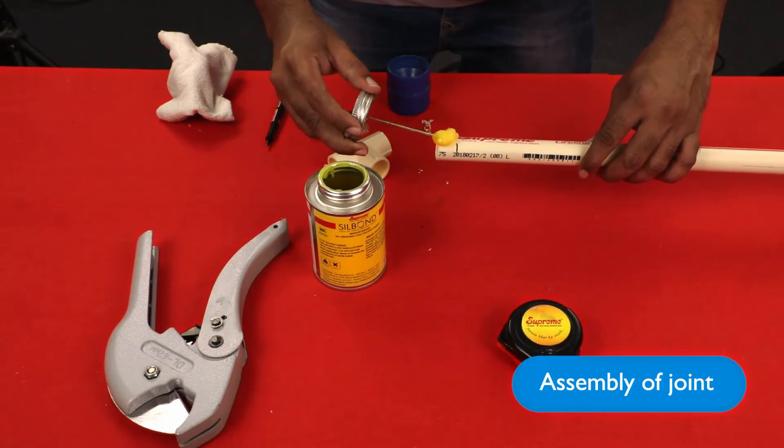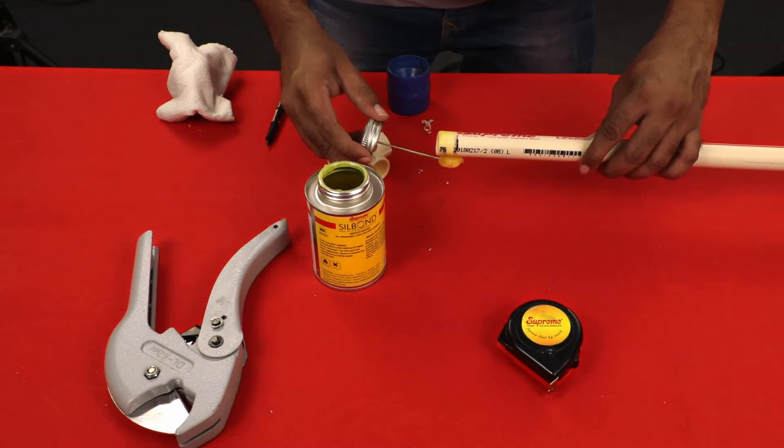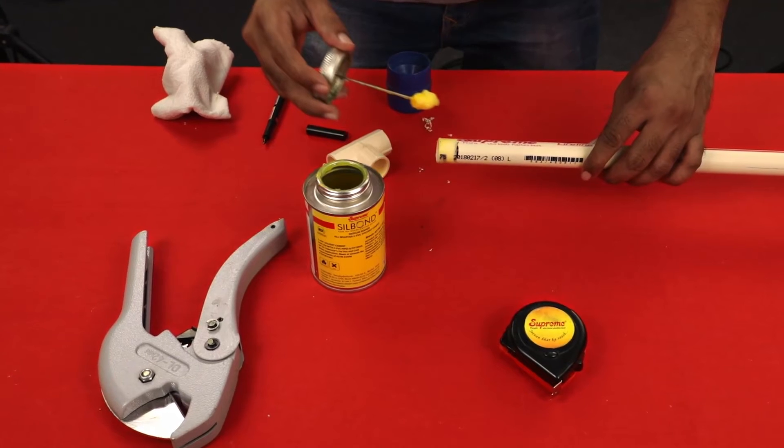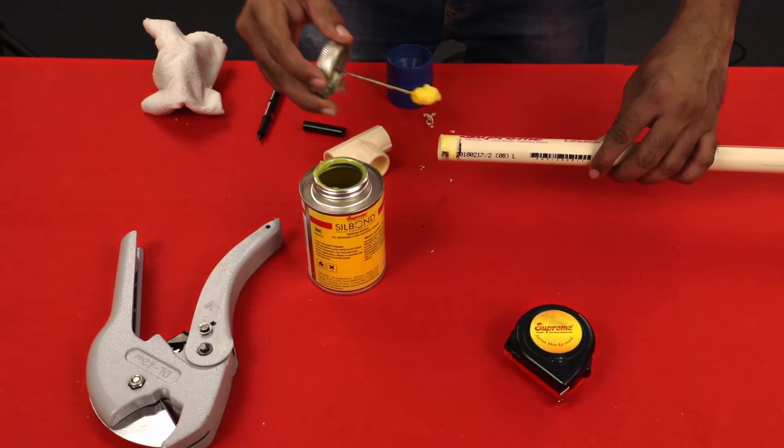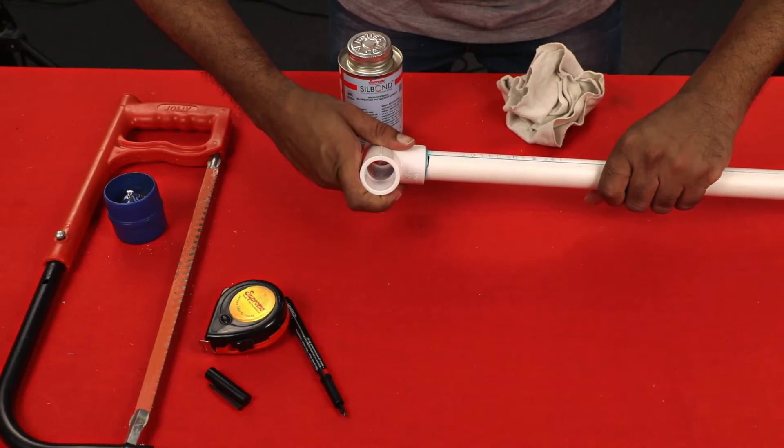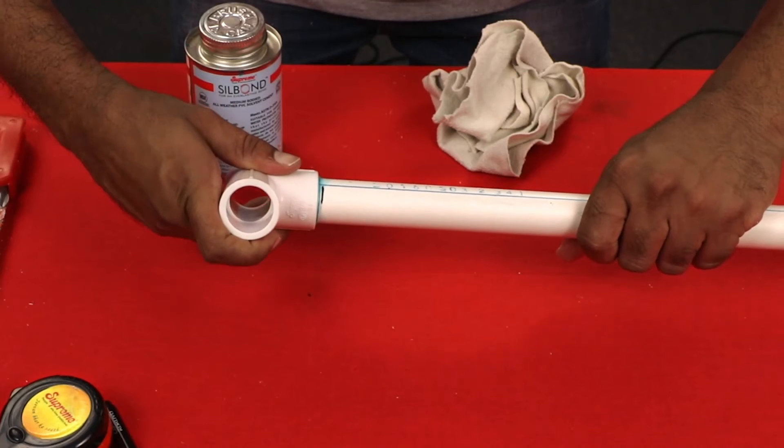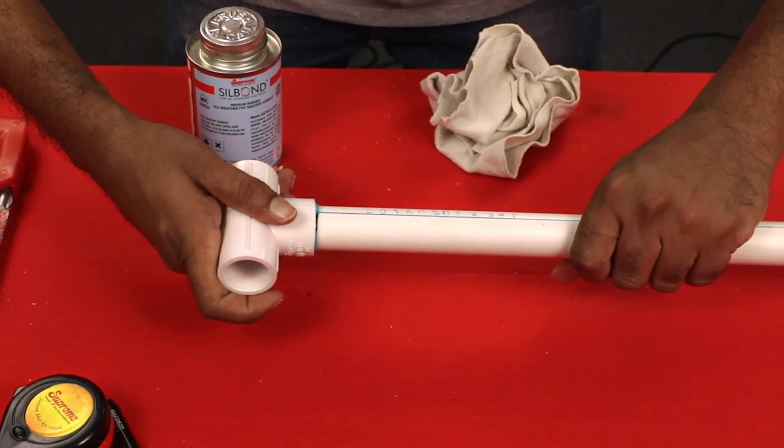Assembly of Joint: Immediately after applying the last coat of cement to the pipe and while the cement is still not dry, that is within 10 to 20 seconds, forcefully bottom the male end of the pipe in the socket, giving pipe or fitting one-fourth turn to distribute cement evenly.